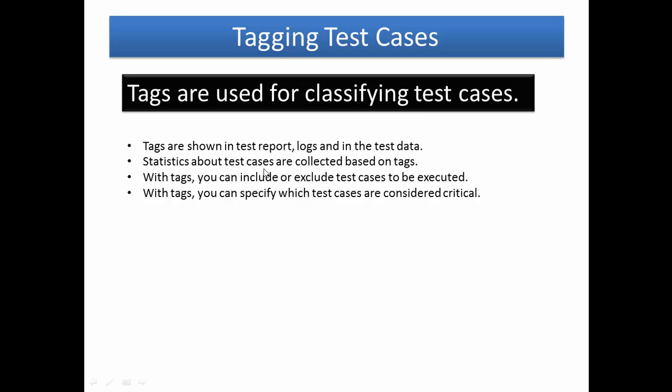Statistics about test cases are collected based on tags. For example, in the test report we have total tests, total passed tests, and failed tests. When we tag test cases, the statistics are collected based on tags, so test cases with the same tag appear in one place in the test report. With tags you can include or exclude test cases to be executed, and you can specify which test cases are considered critical.